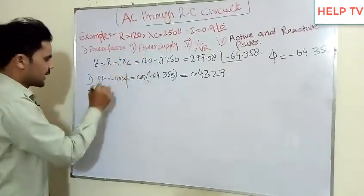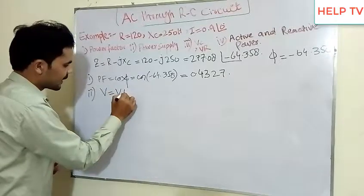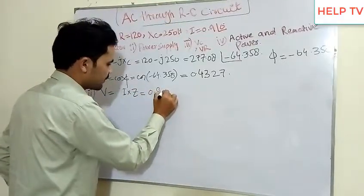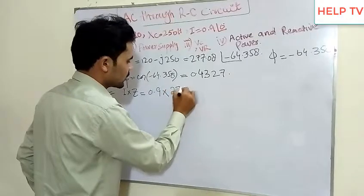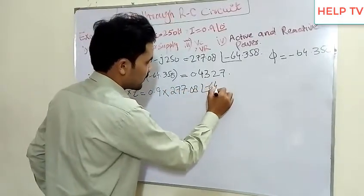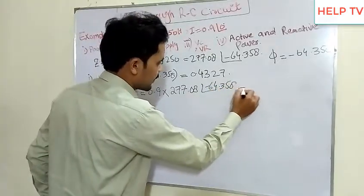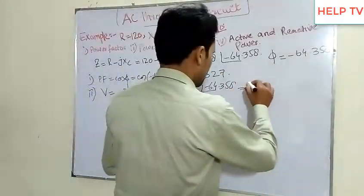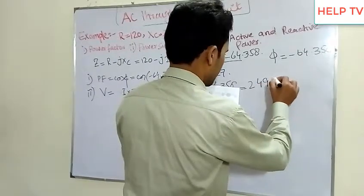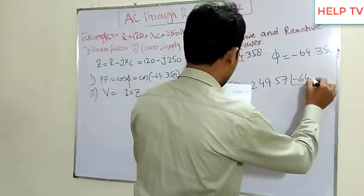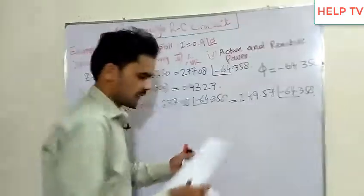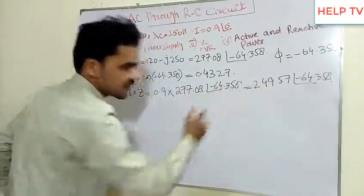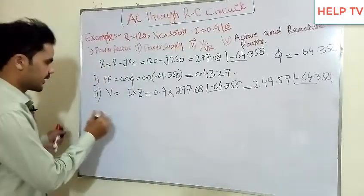Second, we have the power supply voltage. This is V equals I multiply by Z. We have 0.9 multiplied by Z, which is 277.08 at minus 64.358 degrees. This gives us the supply voltage of 249.57 volts.